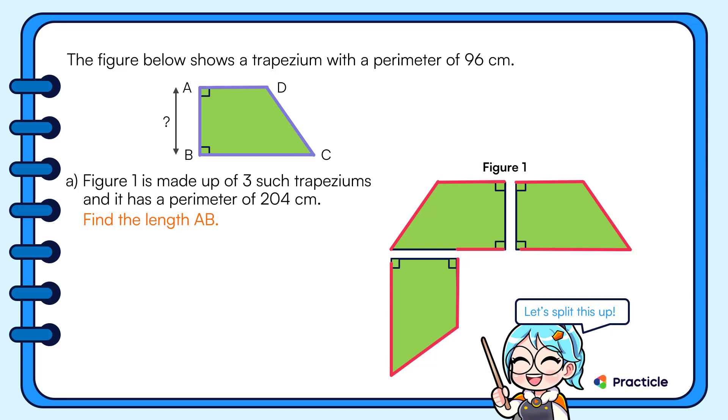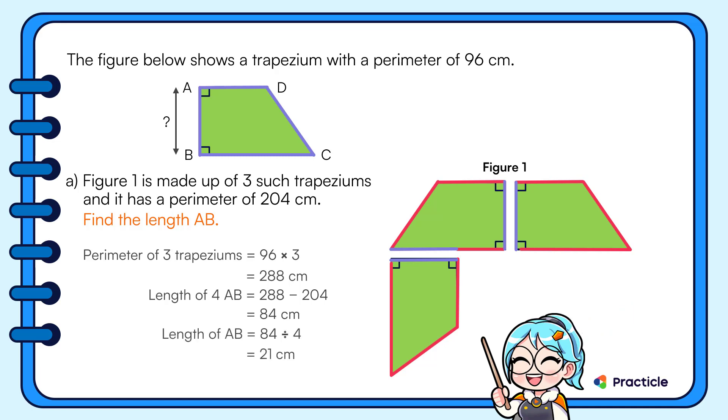When we split this figure up, we can multiply the perimeter of 1 trapezium by 3 to find the perimeter of all 3 trapeziums. And when we subtract the perimeter of the figure from it, that's where the magic happens. We can find the length of 4 AB. Do you see that? And this makes finding the length of AB easy peasy. When we divide 84 by 4, we get an answer of 21 centimeters.